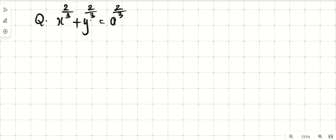The problem is x raised to 2 by 3 plus y raised to 2 by 3 equals a raised to 2 by 3. We must find dy by dx. So here differentiate with respect to x.